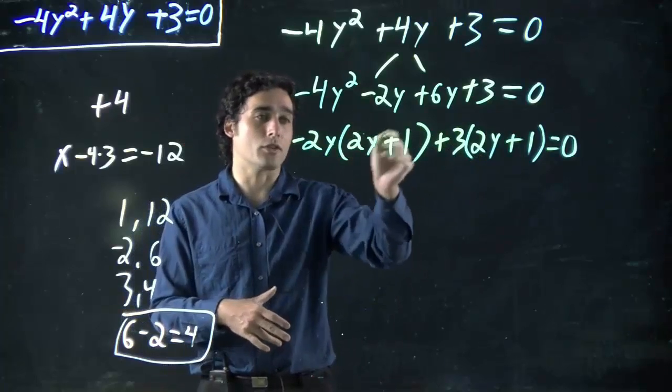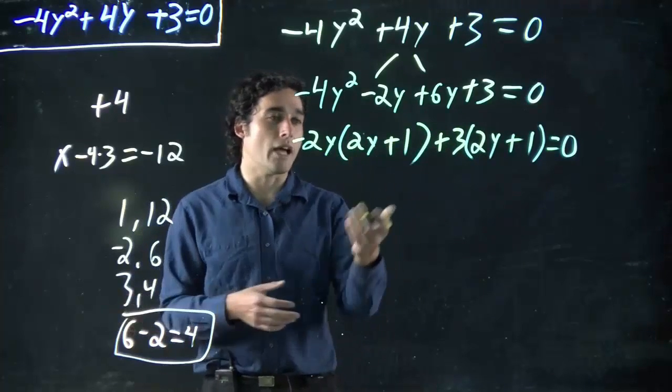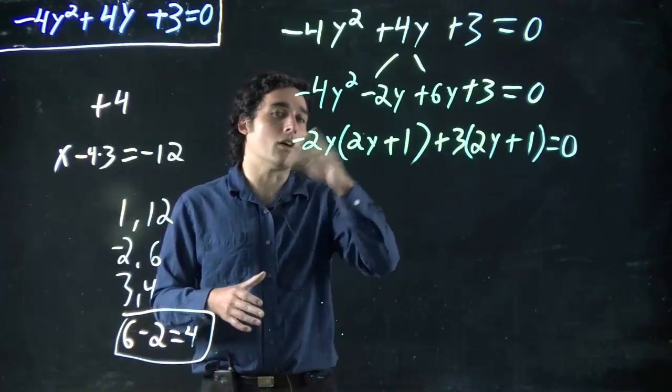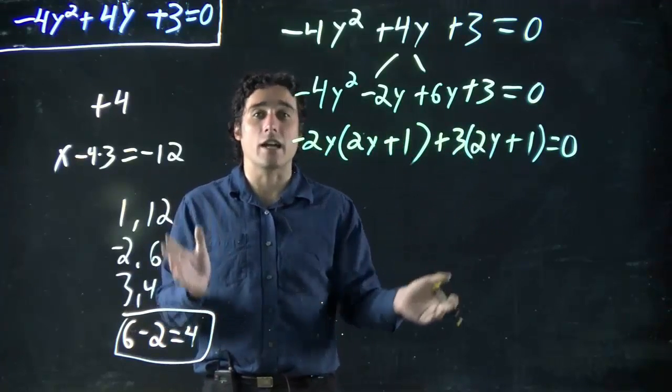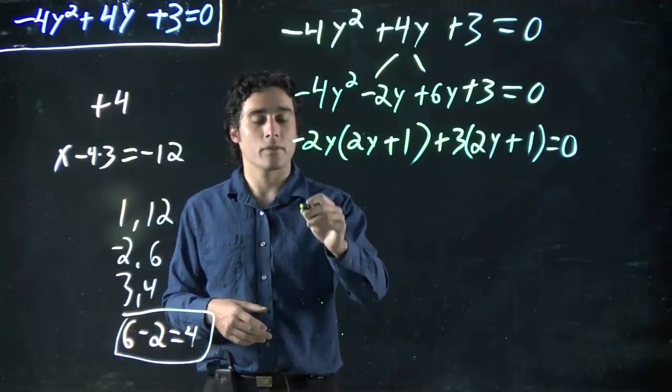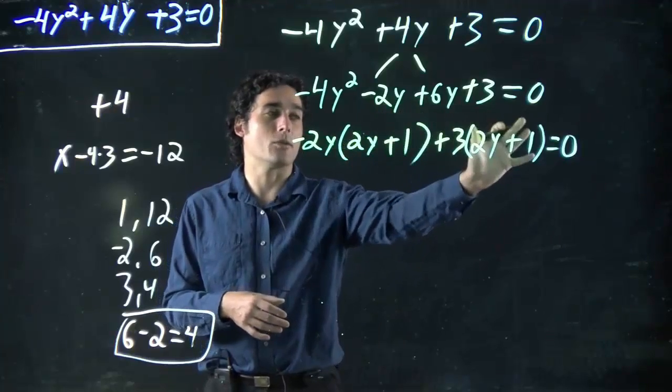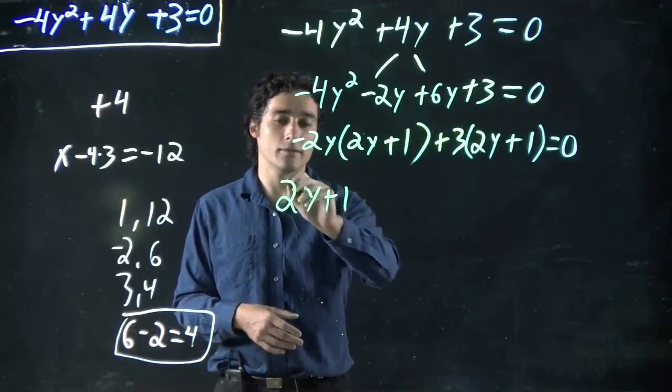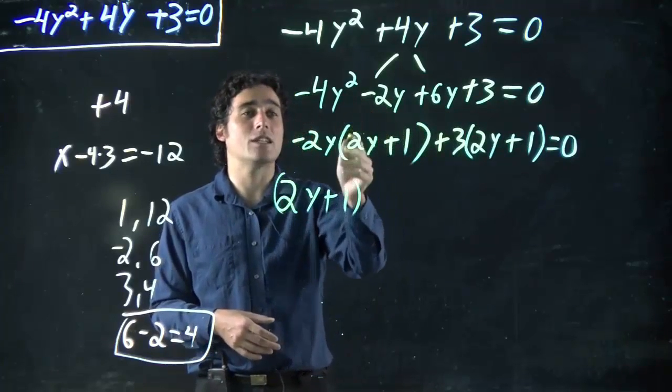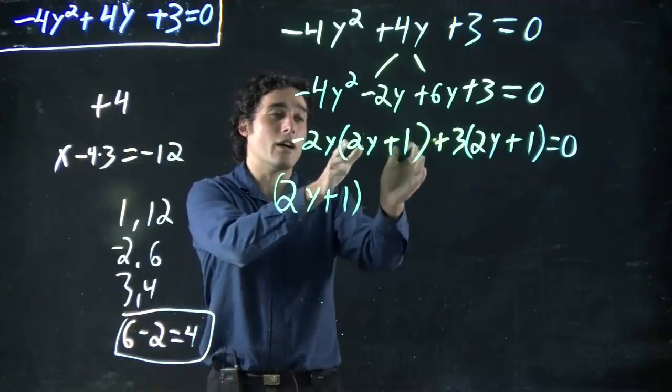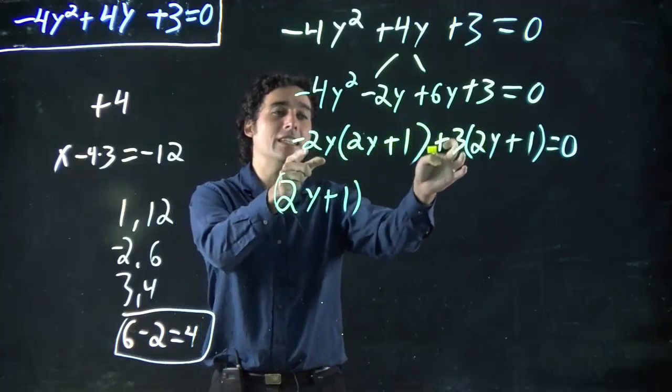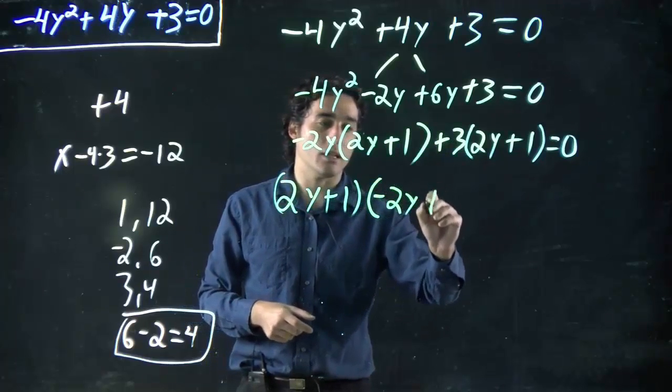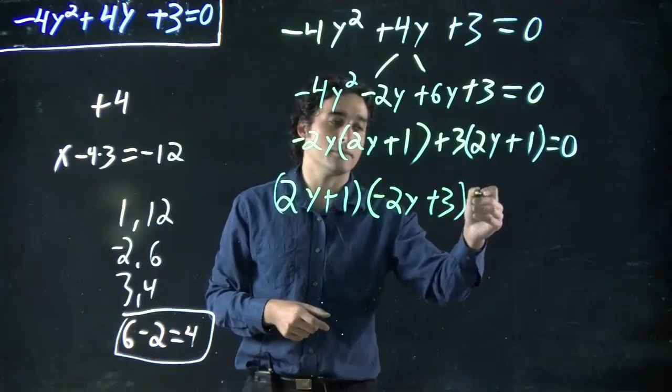Remember, you could do a substitution. Say this whole thing is equal to z or m or whatever you want, just to make it easier to picture, and then you'd factor out that thing and plug back in the value. But in my case, I'm thinking this is one thing in common with that. I can just factor it all out. Factor out the 2y + 1. I still have the -2y + 3 left over. Still all equal to 0.